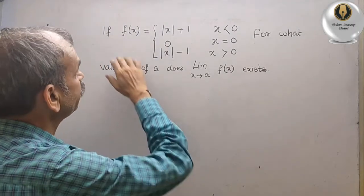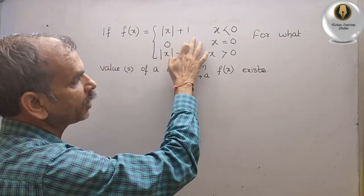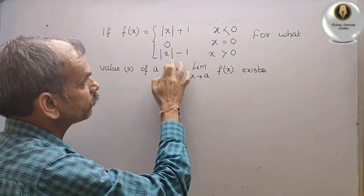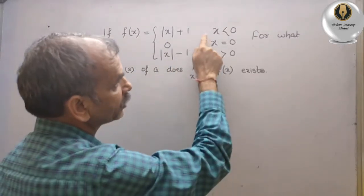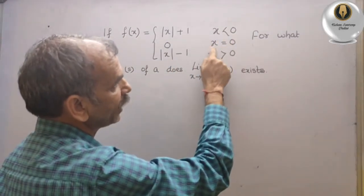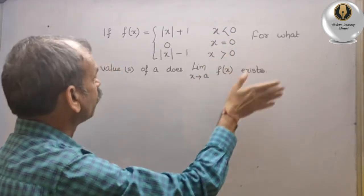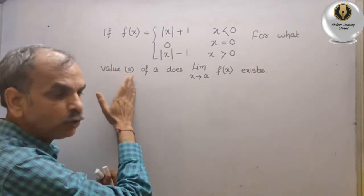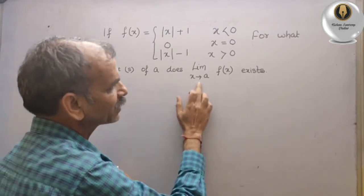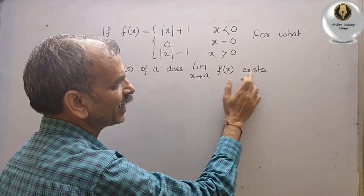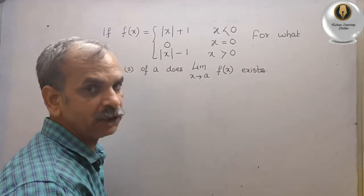The question is: if f(x) equals modulus of x plus 1 when x is less than 0, equals 0 when x equals 0, and equals modulus of x minus 1 when x is greater than 0 — for what values of 'a' does the limit as x tends to 'a' of f(x) exist? First, we will examine this.